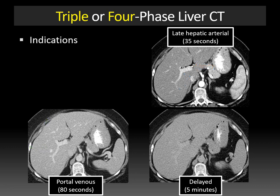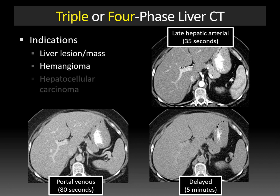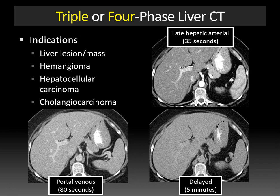The indications for this study are typically to evaluate a liver lesion or mass — that can be anything like a hemangioma, hepatocellular carcinoma, cholangiocarcinoma. There's also some debate as to whether the non-contrast portion of the examination is essential in every study, so you'll see that vary from institution to institution — hence the triple-phase liver CT protocol.